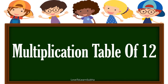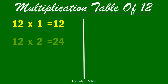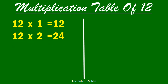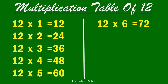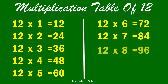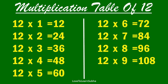Multiplication table of 12. 12×1 is 12, 12×2 is 24, 12×3 is 36, 12×4 is 48, 12×5 is 60, 12×6 is 72, 12×7 is 84, 12×8 is 96, 12×9 is 108, 12×10 is 120.